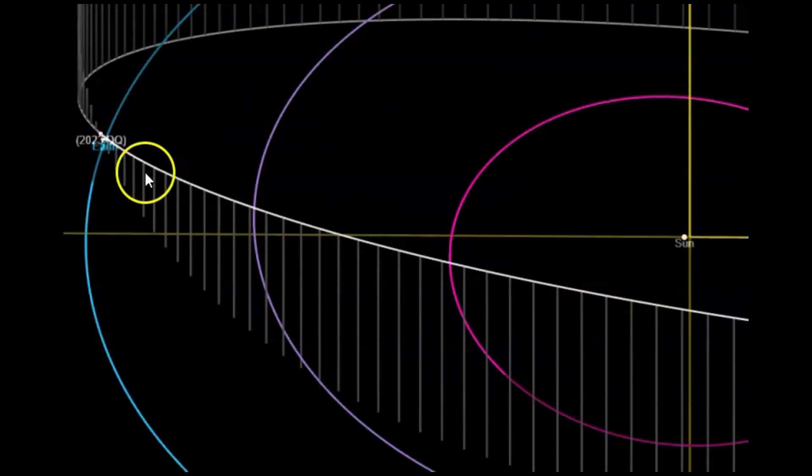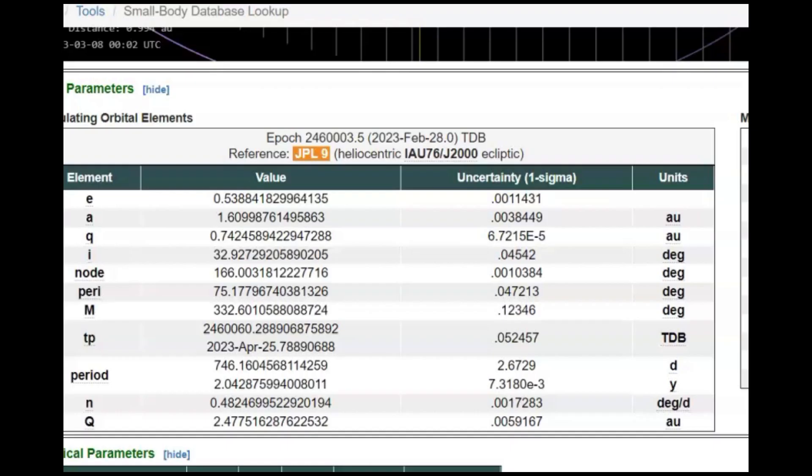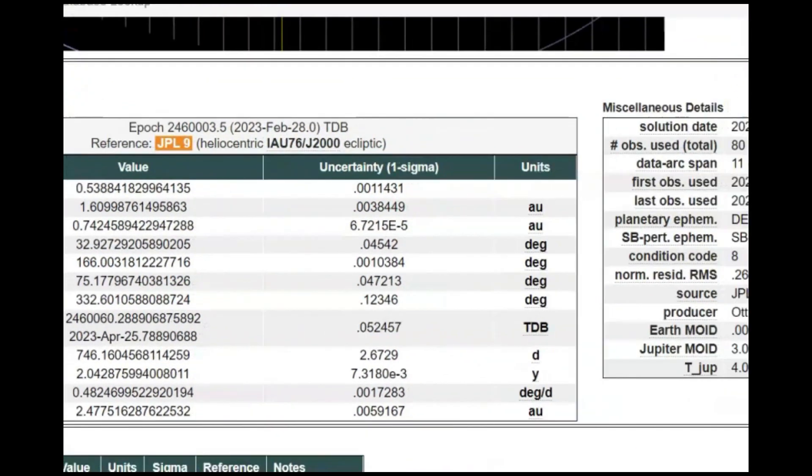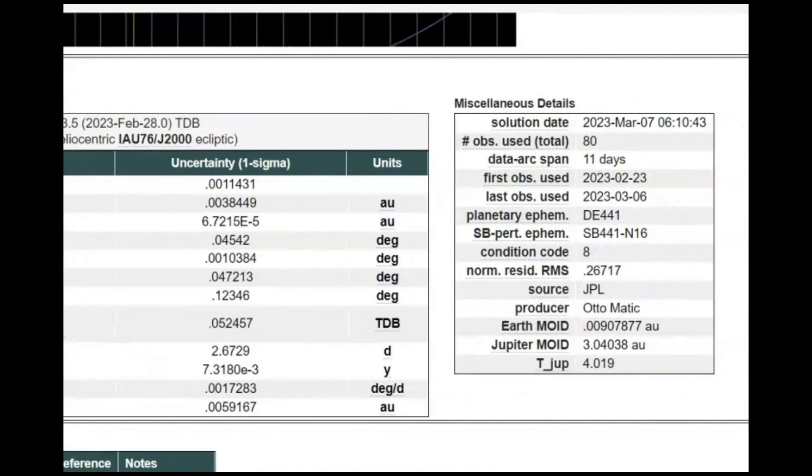So the white line would be the orbit of asteroid 2023 DQ, and then the green line or blue line would be Earth. Now, according to Jerusalem Post, it's supposed to be about 890 feet across. And I'm showing you what JPL is showing. This is all they're showing.